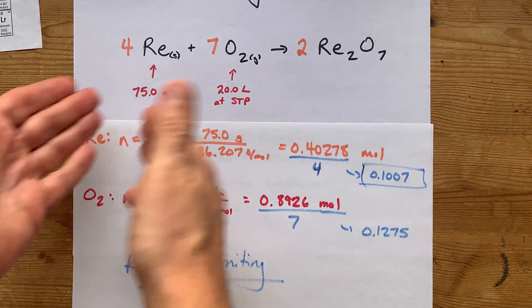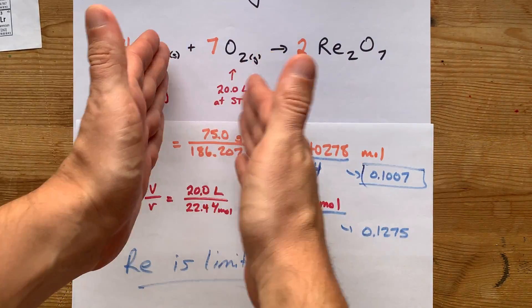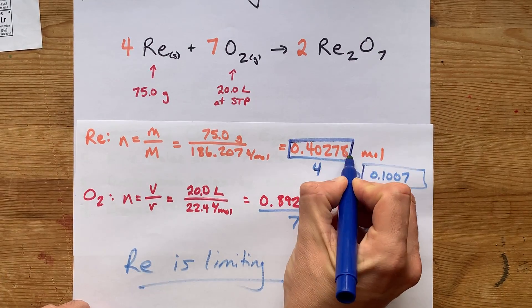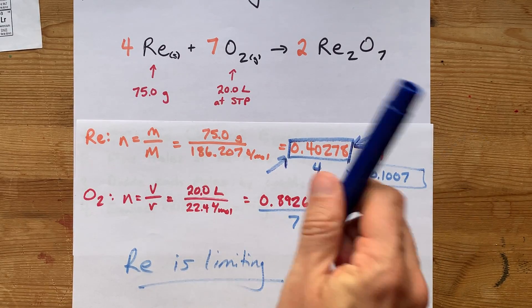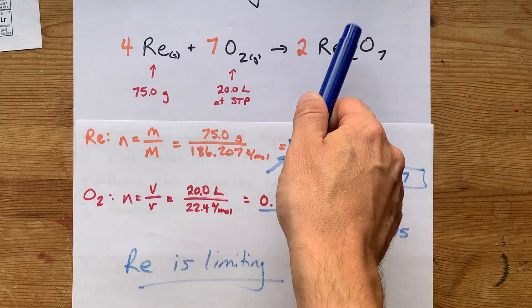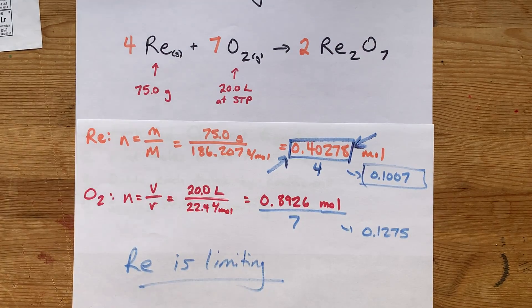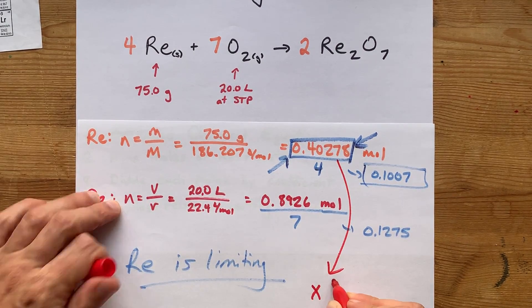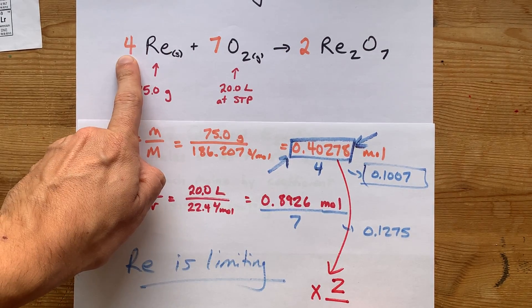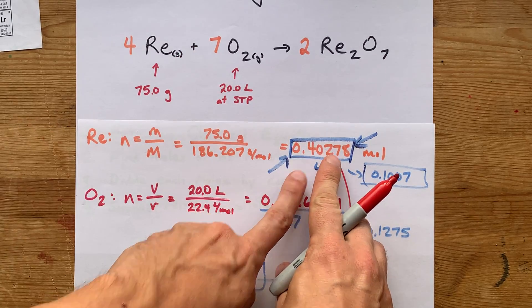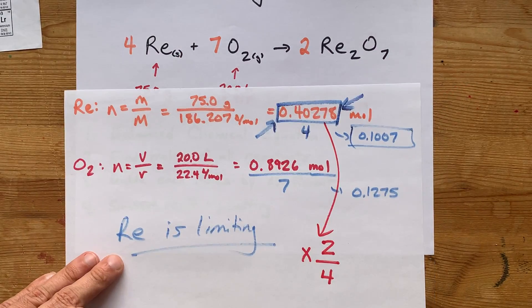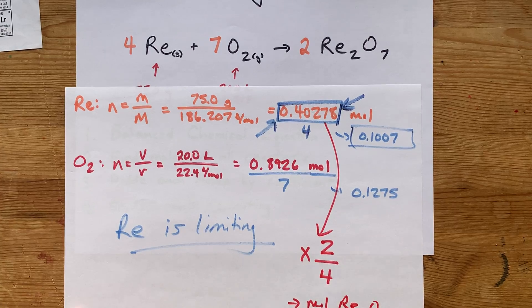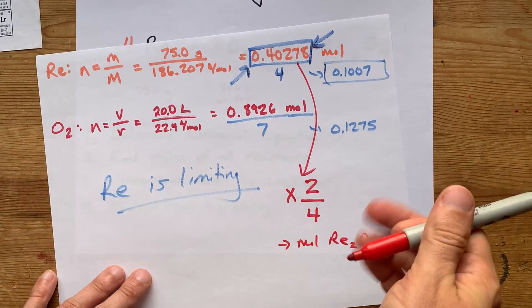If you're being asked to calculate how much of this is made, like the yield of a product, go all the way back to the number of moles of that limiting reactant and multiply it by a mole ratio to figure out how many moles of your product was made. In this case, take that number of moles and multiply it by 2 over 4, because you're exchanging 4 of the rheniums for 2 of the products. That's going to give you moles of Re2O7, and then you can convert that to grams if you're being asked to do that.